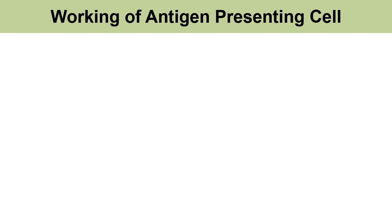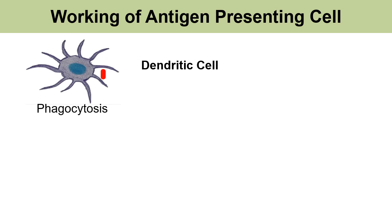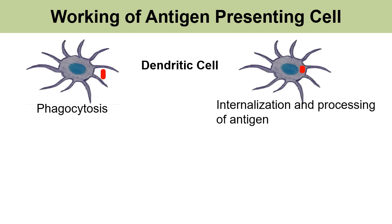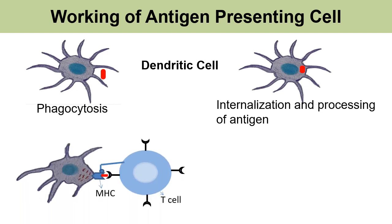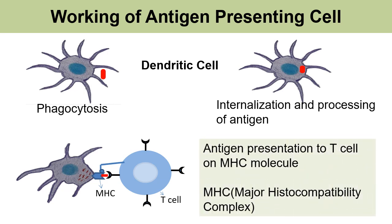Let us see the way the antigen-presenting cells work, taking the example of the dendritic cell, which is the predominant antigen-presenting cell. Since it is a phagocytic cell, it internalizes the pathogen by phagocytosis, then processes the antigen into short amino acid chains. The processed antigen is presented on an MHC molecule — MHC stands for major histocompatibility complex. After loading it onto the MHC molecule, it presents it to a T cell, helping connect the innate immune system with the acquired immune system.